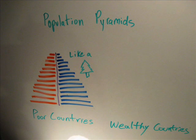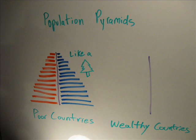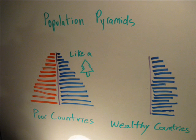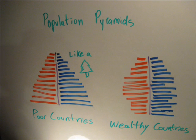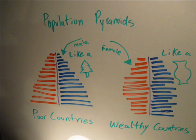In poorer countries, the pyramid looks like an evergreen tree with a wide base and short branches at the top. Population pyramids for wealthier countries look like a slightly lopsided base with a wide middle.